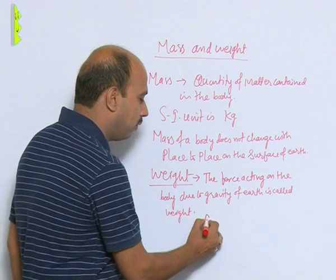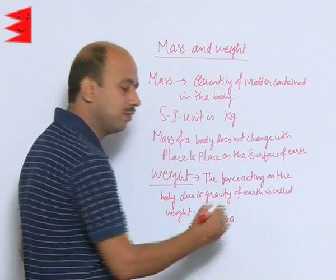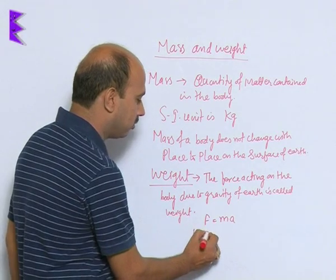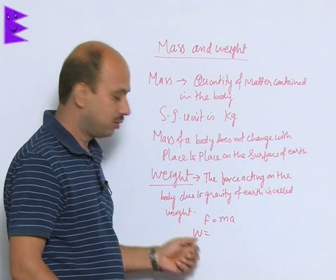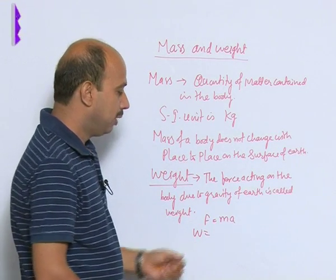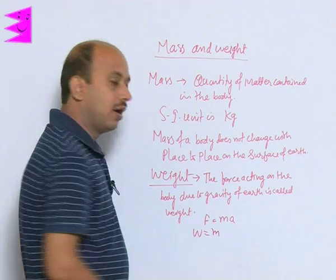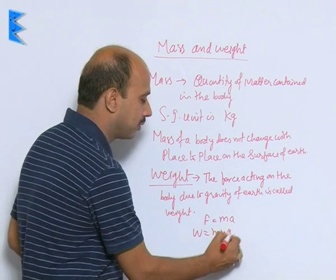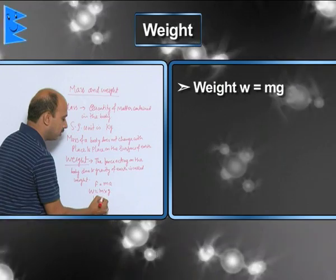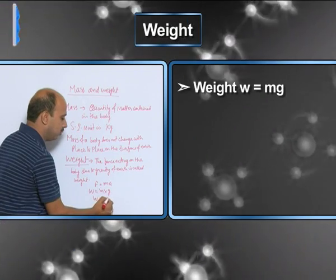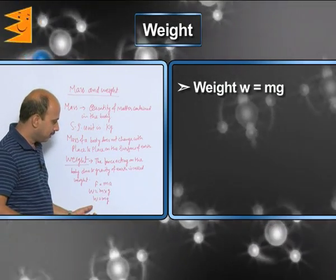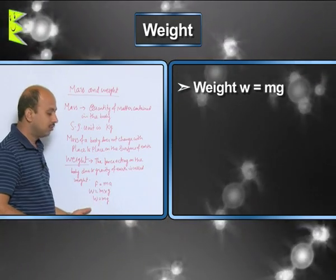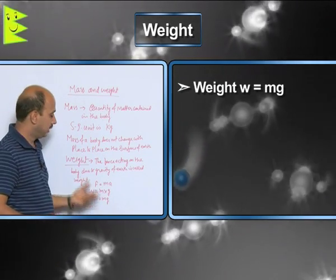As we know, force is equal to m into a. We can write here W — W refers to weight — W is equal to m, and in place of a we will be writing g. So we can write W is equal to m into g. Weight is represented by W and that is equal to m into g.